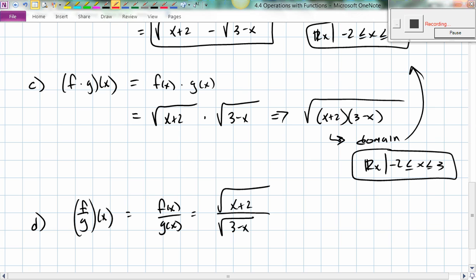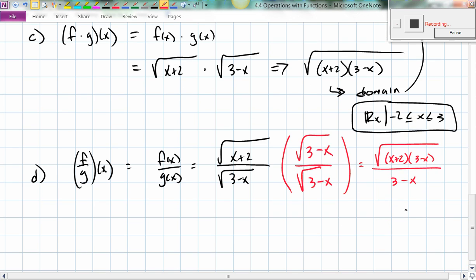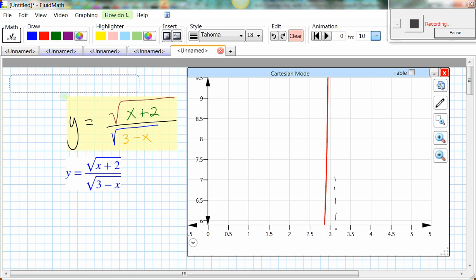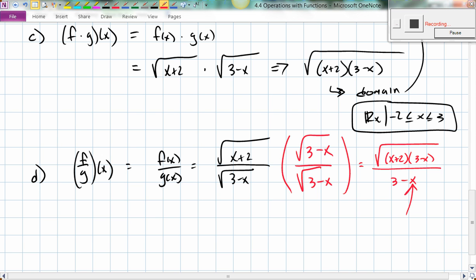So going back over here. What the book does, they do something interesting here. They multiply top and bottom by the square root of 3 minus x. Square root of 3 minus x. And that simplifies this composite function to the square root of x plus 2 times 3 minus x, all divided by 3 minus x. And you can see down here, since we need, we need to exclude 3 because we would be dividing by 0, which is why you get the asymptote here at x equal to 3. So that's how these things are connected.